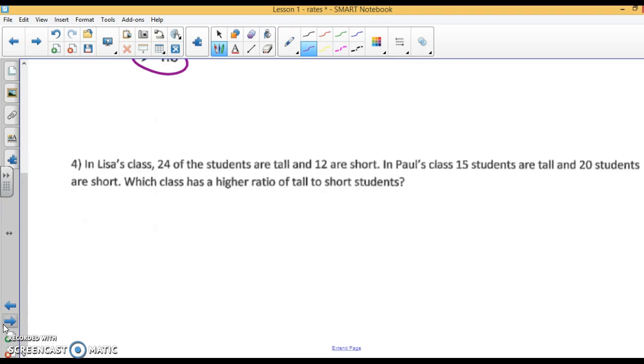In Lisa's class, 24 of the students are tall and 12 are short. In Paul's class, 15 are tall and 20 are short. Which class has a higher ratio of tall to short? So tall to short - let's see, 24 to 12, this is Lisa, which is 2 to 1, so 2 tall to 1 short. And Paul's class has 15 tall to 20 short, which is 3 to 4. So 2 to 1 is much bigger than 3 to 4, so Lisa's class has the higher ratio.